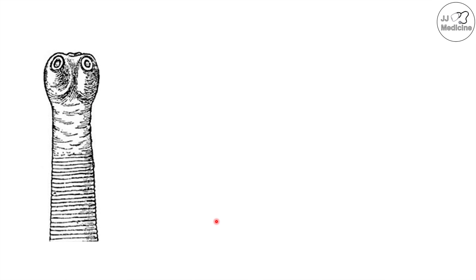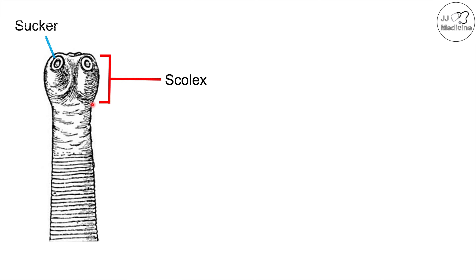Here is what a tapeworm looks like and we're going to go into some specific details with regards to the anatomy of a tapeworm. The tapeworm has a head known as a scolex. The scolex is where the tapeworm attaches with what are known as suckers, and along with these suckers, some species also have a hook on their scolex.